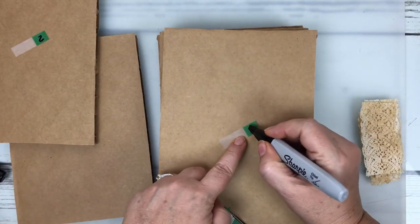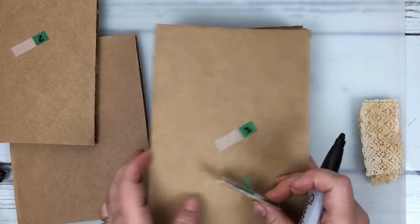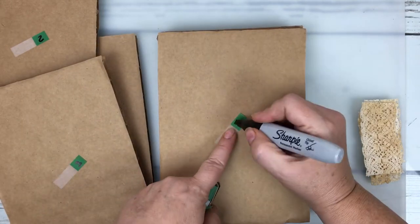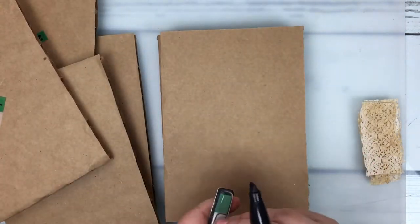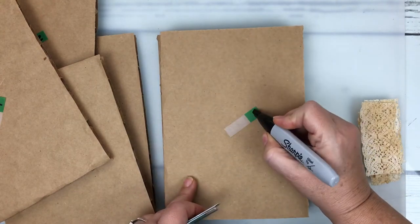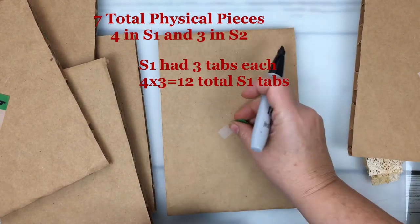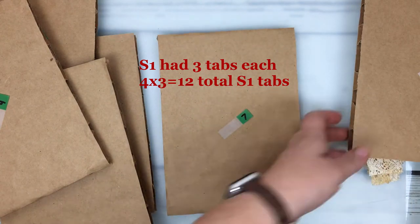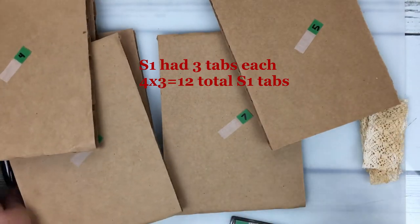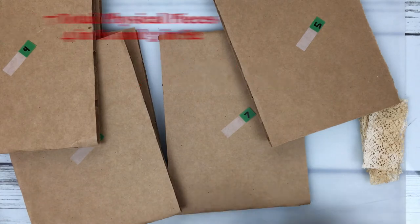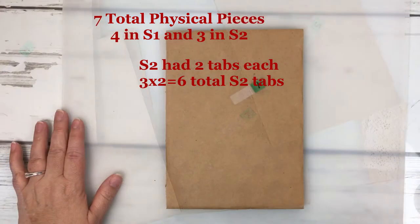Now we need to calculate how many tabs of each you're going to need. I had seven physical pieces, four of those pieces are in sequence one so three tabs each. I calculate that at four times three equals twelve canvas tabs. For sequence two we do the same calculation.